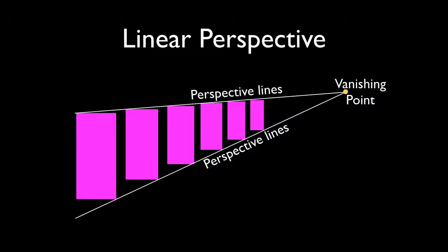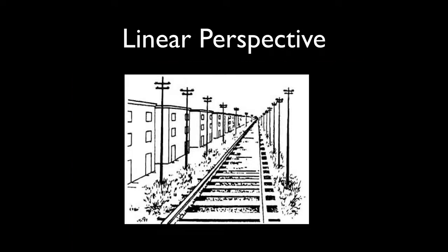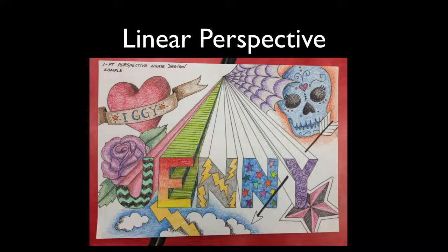Here are some pictures that use linear perspective. Railroad tracks disappear off into a tunnel behind the vanishing point. Here are rows of buildings, rows of telephone poles, railroad tracks all moving back and disappearing at a single vanishing point. Here is a perspective design done by a student where these lines make the name really pop out and look like it goes back almost an infinite distance.